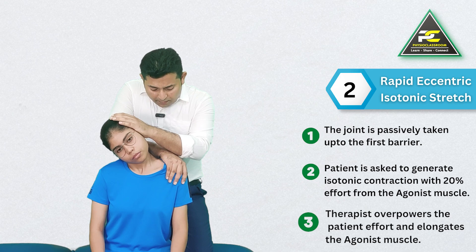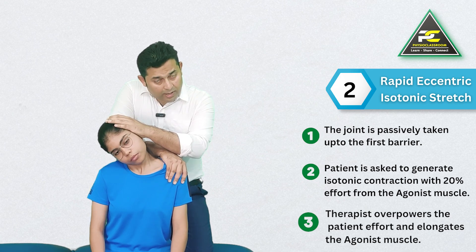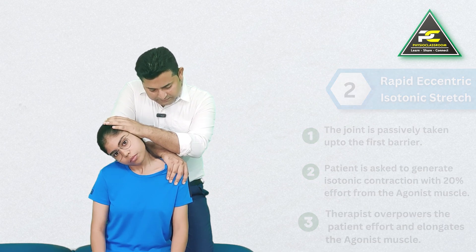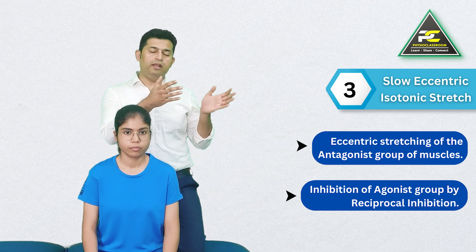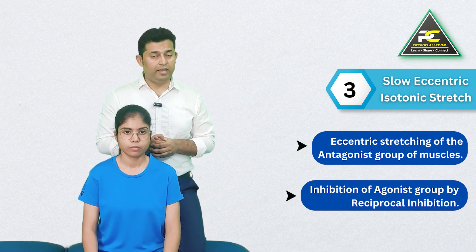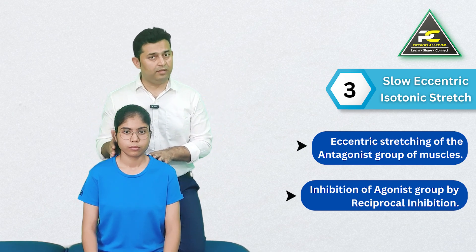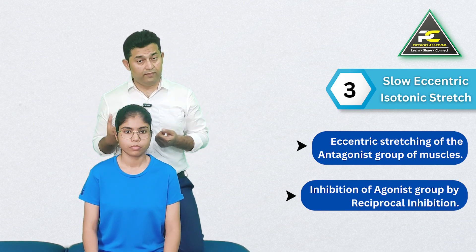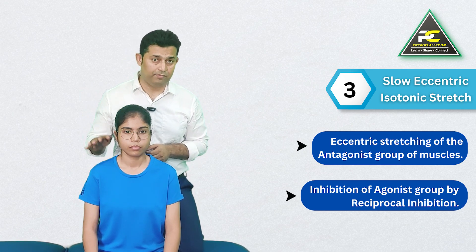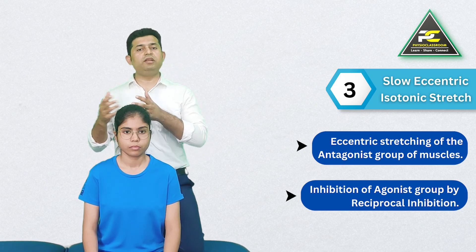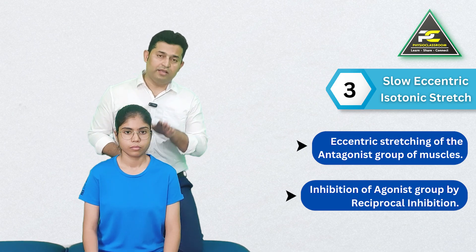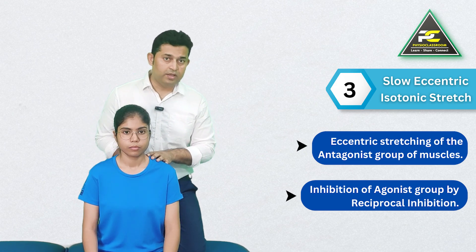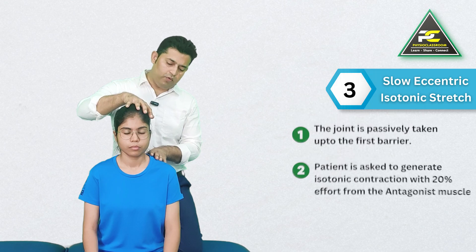The third variation of MET is known as the slow eccentric isotonic stretch. In this form, the antagonist muscle is eccentrically stretched during contraction of that same muscle. The intention is to tone the antagonist muscle and reciprocally inhibit and relax the agonist group. For the same example, the left tight upper trapezius is positioned into its available range at the first perceived barrier.